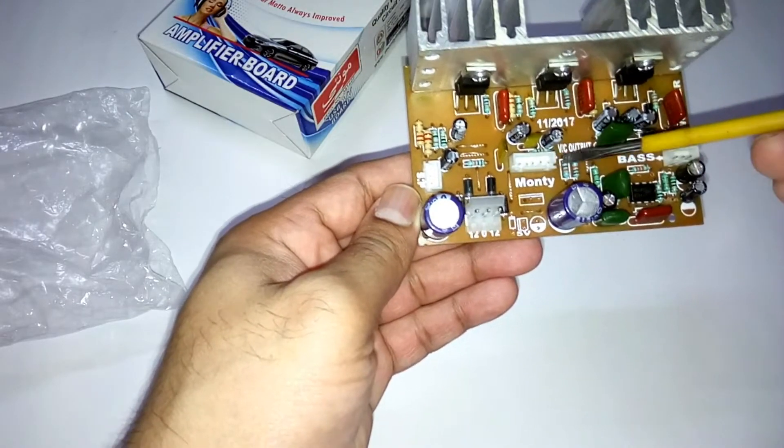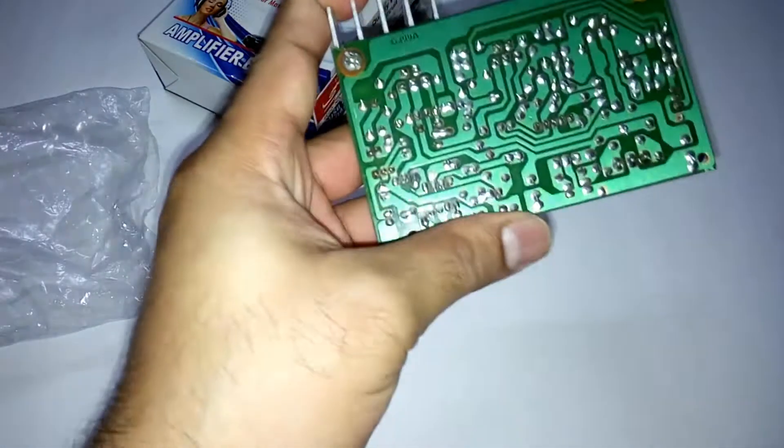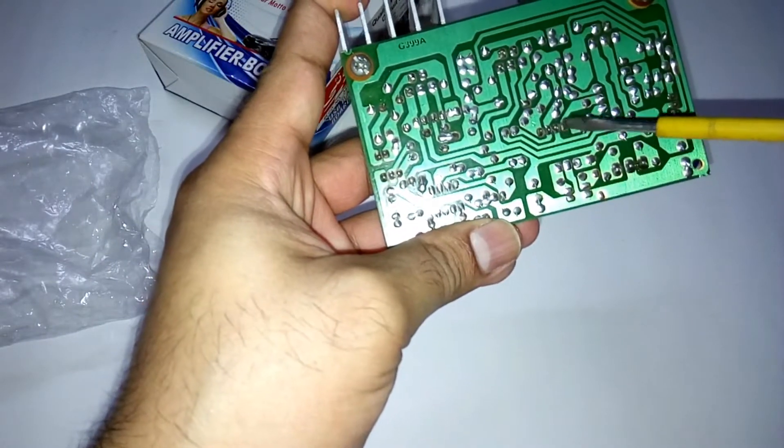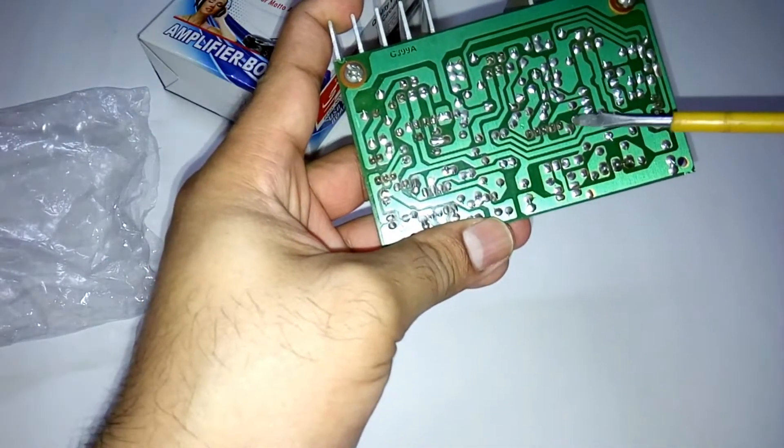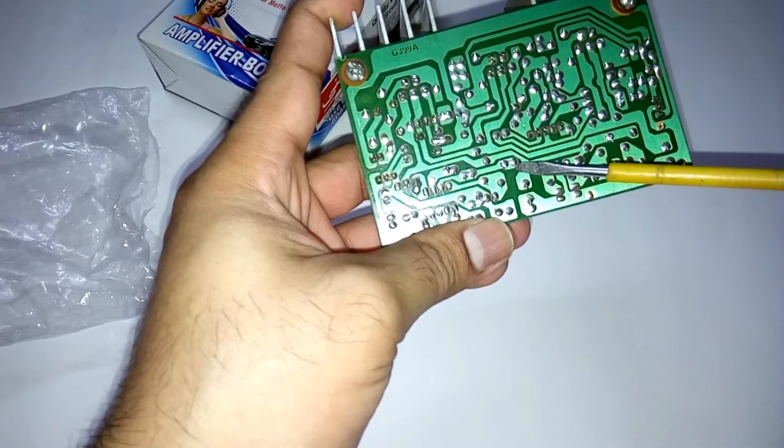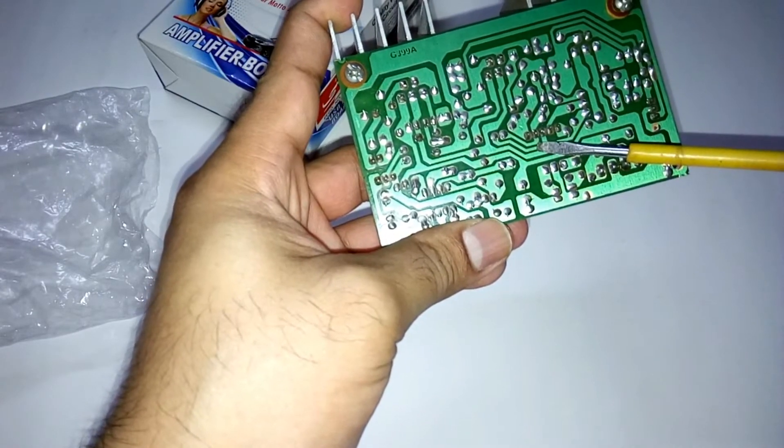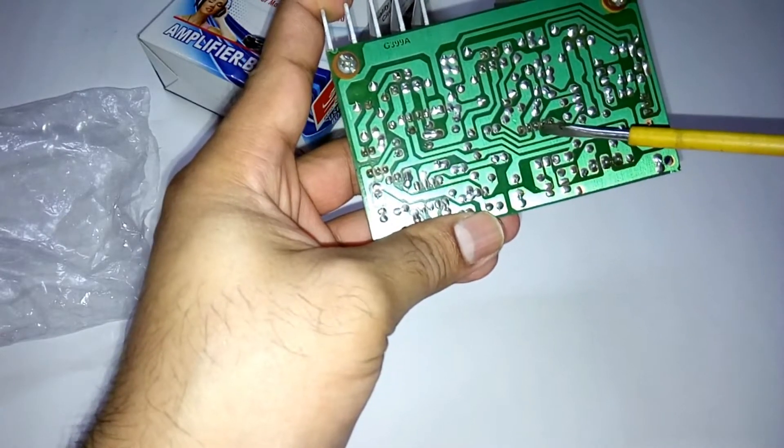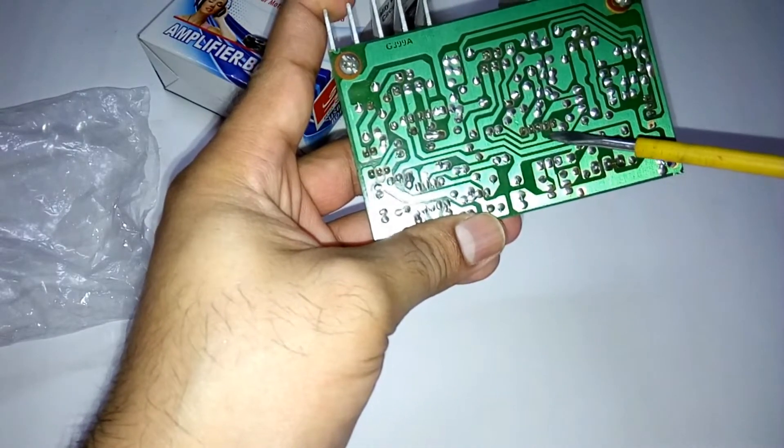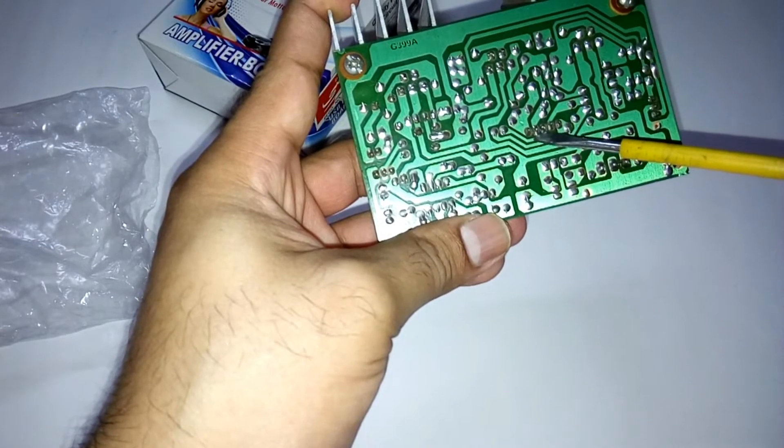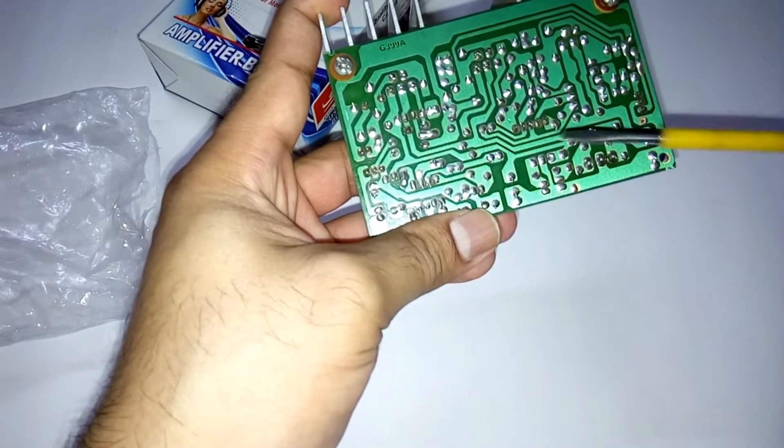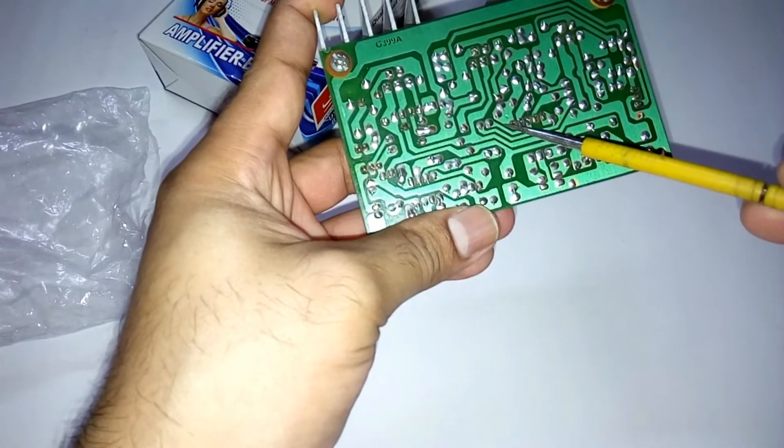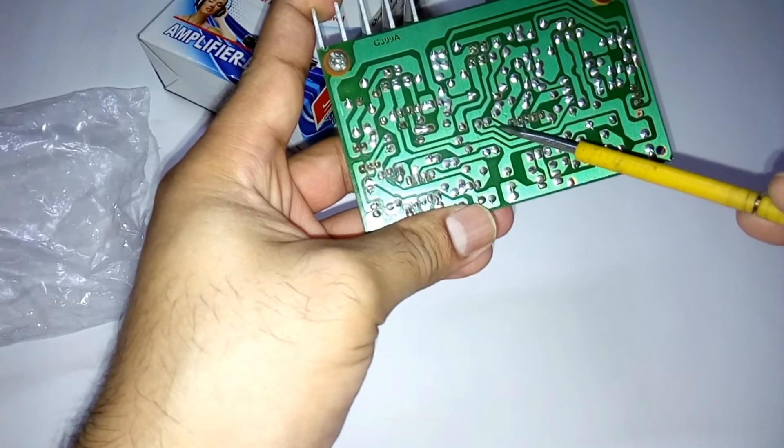And the input connections will also be here. It looks like this because the subwoofer connection has also gone through here, so I think this one and this one. I'm not sure about that. I'm gonna find out later. This is the ground I think.